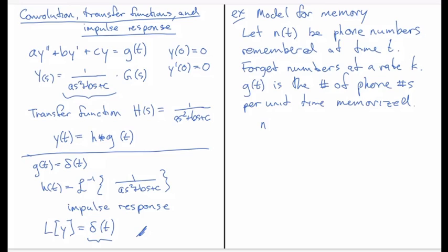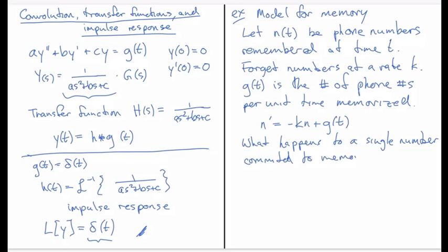So the differential equation that we would write down for this would be n prime equal the number that disappear per unit time plus the number that are inserted per unit time. And so what can we do with this g of t? So g of t may be some complicated function depending on when you meet people and when you realize that you've lost your phone numbers and so on. But what we can do is we can just ask the question, what happens to a single phone number remembered or committed to memory?